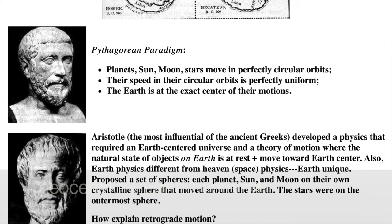About a century after Pythagoras, we come to Aristotle, who had probably the most significant influence on many fields of study of any single person in history. Aristotle developed a physics that required an Earth-centered universe and a theory of motion where the natural state of objects on Earth is at rest, and moving objects will move toward the Earth's center. Also, this physics assumed that the Earth was unique with its own set of physical laws that were different from how things worked in the heavens.